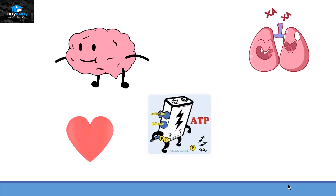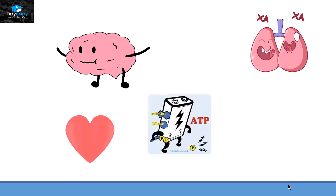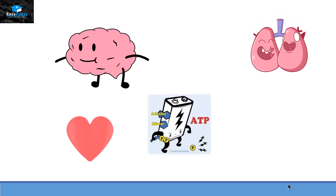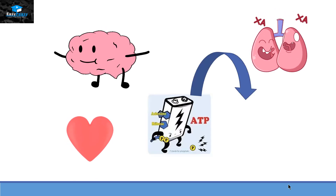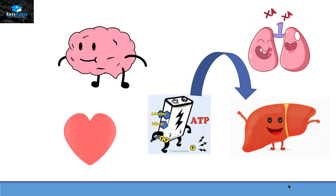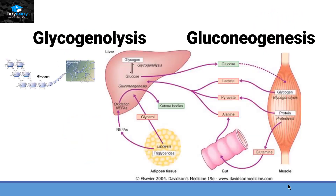So in order to solve this problem, ATP is generated by the liver from processes called glycogenolysis or gluconeogenesis. These processes will be explained in a separate video.